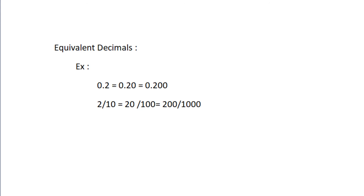Next, equivalent decimals. Adding or removing zeros at the end of a decimal number does not change its value. These numbers are called equivalent decimals. For example, 0.2 equals 0.20 equals 0.200. This can also be checked by comparing the decimals with equivalent fractions. That is, 2 by 10 equals 20 divided by 100 equals 200 divided by 1000.